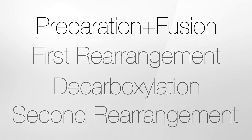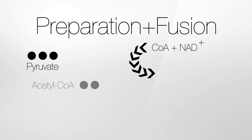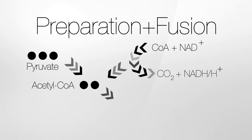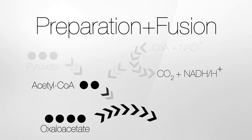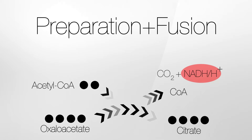The first stage is preparation and fusion. Pyruvate is combined with coenzyme A by the enzyme pyruvate dehydrogenase and subsequently decarboxylated to acetyl-CoA, with the simultaneous production of carbon dioxide and NADH. The next step of the first stage is the fusion of acetyl-CoA with oxaloacetate by the action of citrate synthase to citrate, while coenzyme A is split off. This step is the actual start of the cycle.